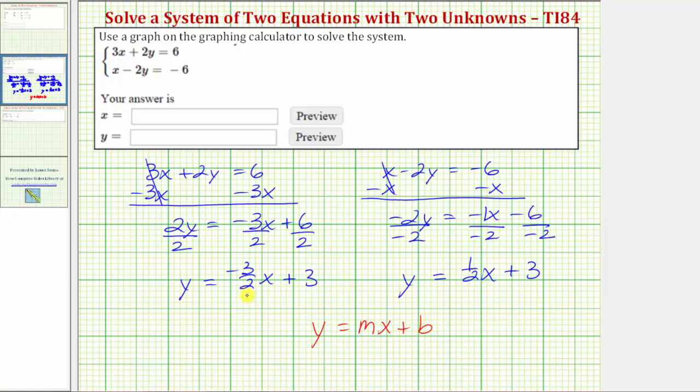So this line has a slope of -3/2. This line has a slope of 1/2. This line has a vertical intercept or y-intercept of positive 3. And notice, so does this one.